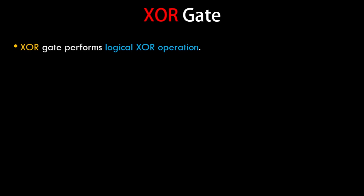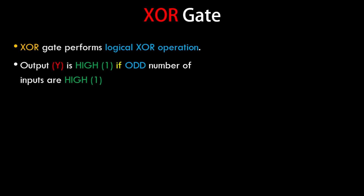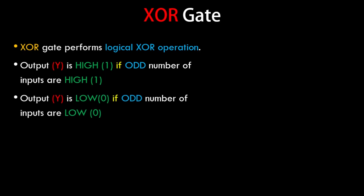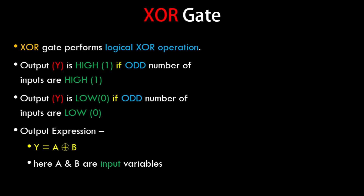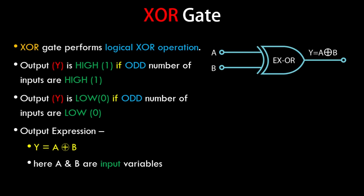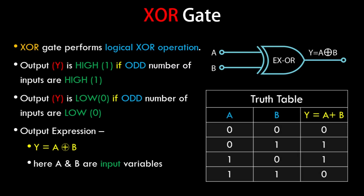The XOR gate performs a logical XOR operation. It is a special gate where the output Y is high if an odd number of inputs are high, and low if an even number of inputs are high. The expression is Y equals A XOR B — it looks like an OR operation but with a circle around the plus symbol. The symbol is similar to the OR gate but with an extra curve at the inputs.